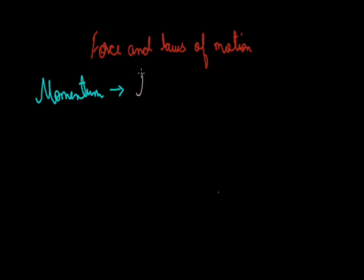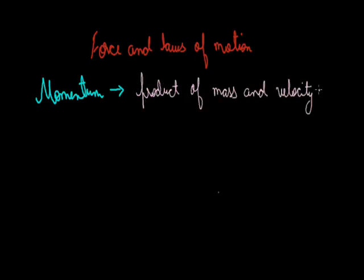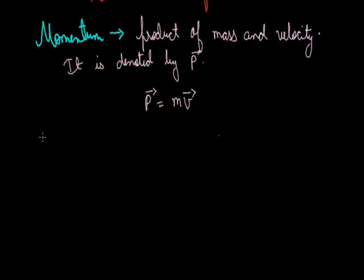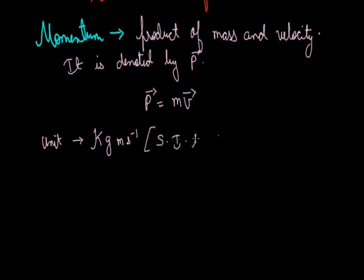Now we will define momentum. It is commonly denoted by p. And p is equal to m into v, where m is mass and v is velocity. If we talk of units, the SI unit of mass is kg and the SI unit of velocity is meter per second. So the unit of momentum is kg meter per second. This is the unit taken in the MKS system or SI system. But in the case of the CGS system, the unit becomes gram centimeter per second. So this is the CGS unit of momentum.